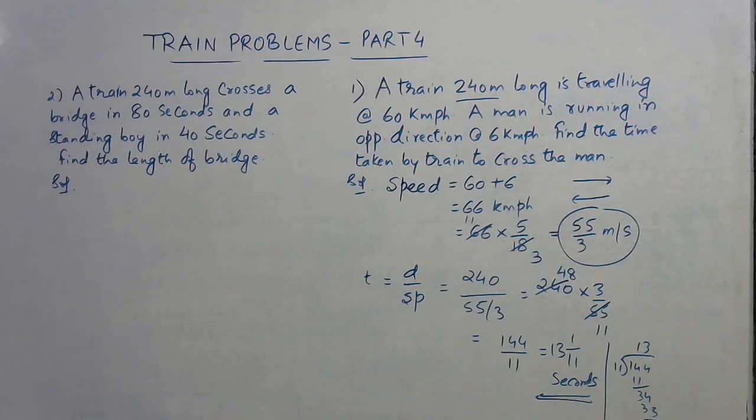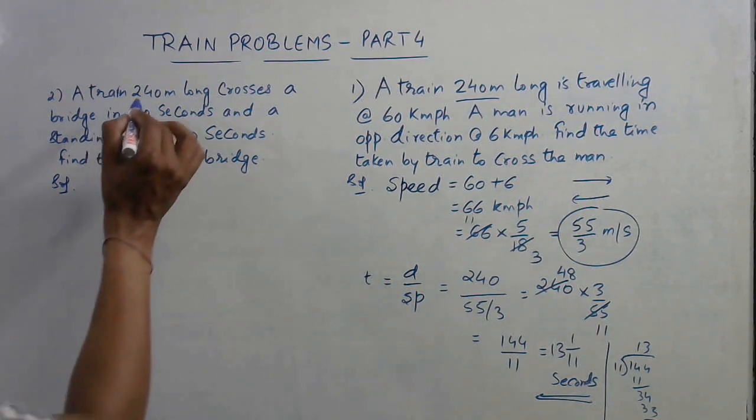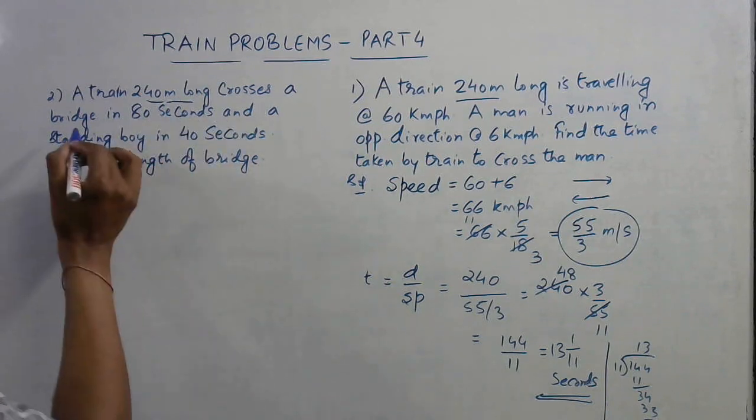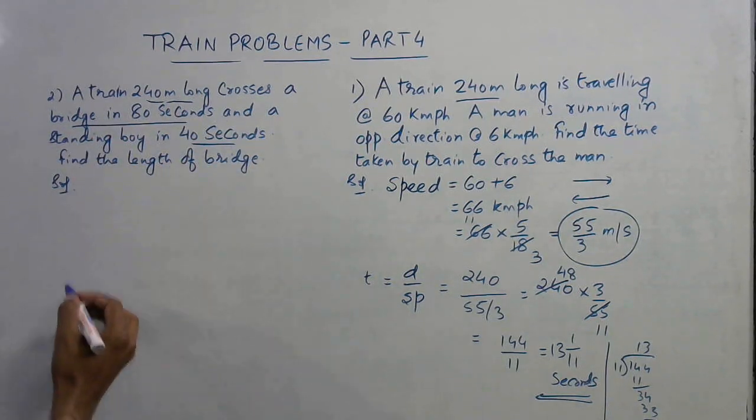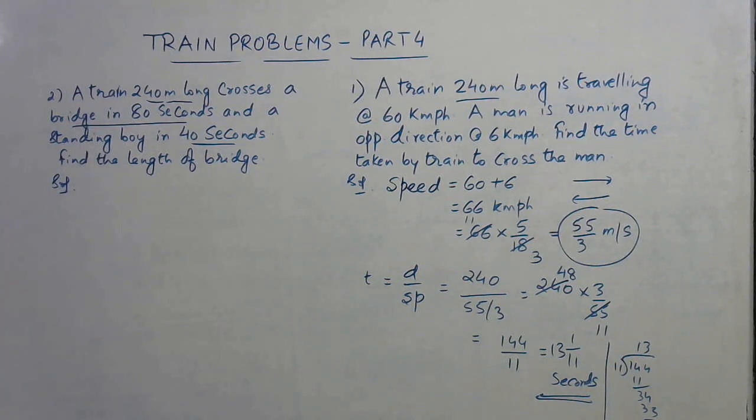Now let us see the next question in which there is a train 240 meters long. It crosses a bridge in 80 seconds and a standing boy in 40 seconds. So there are two times which are given in this question: that of crossing a bridge and that of crossing a stationary boy, and we need to find the length of the bridge.